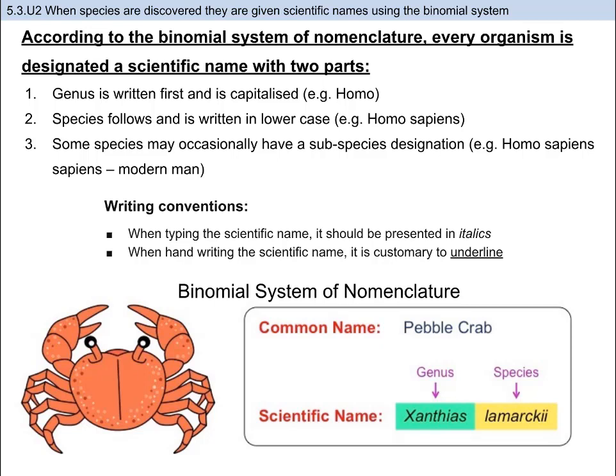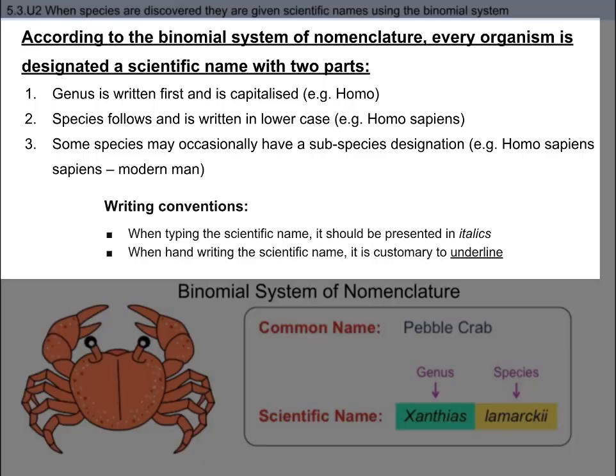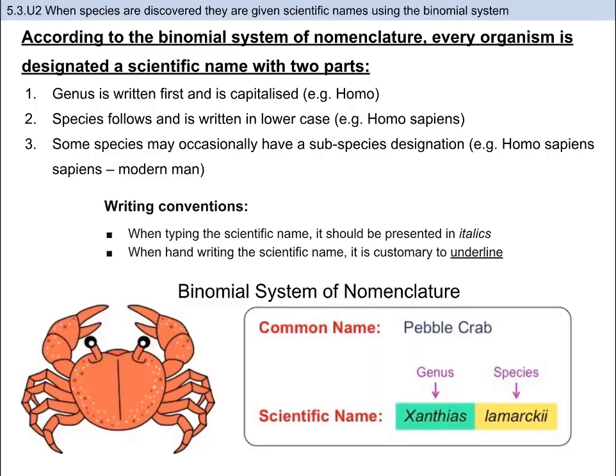There are some other rules that must be kept in mind for binomial nomenclature. First, the genus is written first and is always capitalized. Second, the species follows and is written in lowercase. Sometimes you will see a third word following the species that is also lowercase — that is the subspecies. For example, Homo sapiens sapiens denotes modern humans. Lastly, when you type a scientific name, use italics for the genus and species; if you write it by hand, the genus and species are underlined.